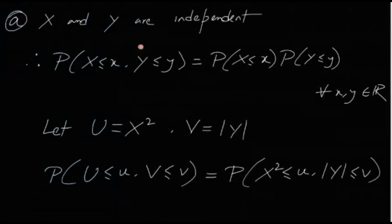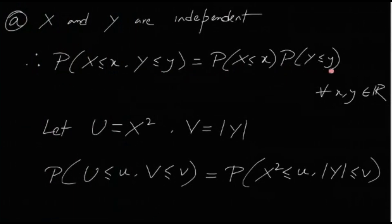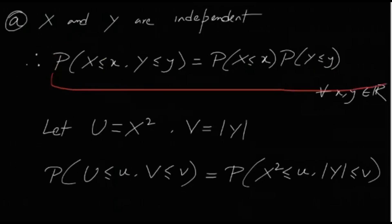If X and Y are independent, that means P(X ≤ x, Y ≤ y) = P(X ≤ x) · P(Y ≤ y). The joint CDF splits into the product of the individual CDFs for all real numbers x and y. Independence of X and Y implies this equation.